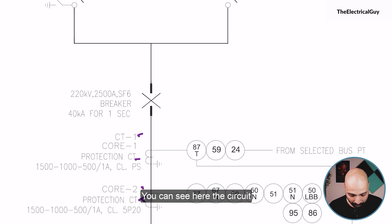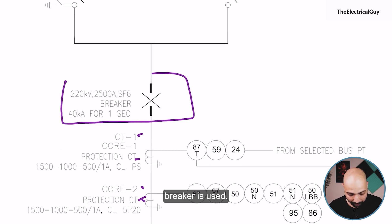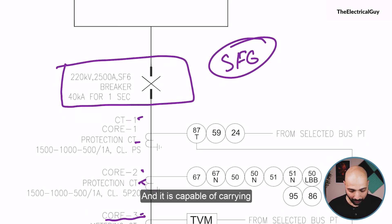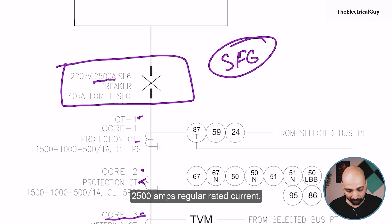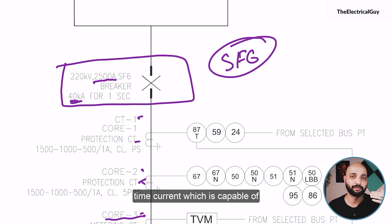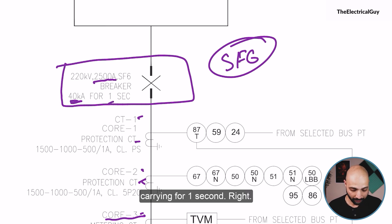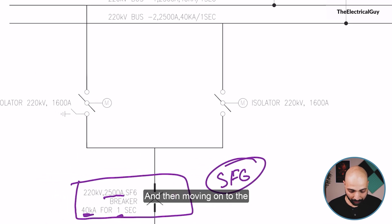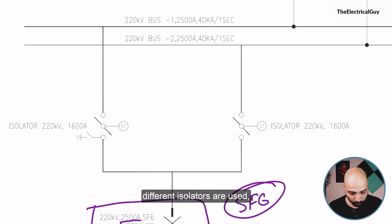Moving on, you can see the circuit breaker is used. This is an SF6 circuit breaker — almost all circuit breakers you will see nowadays are mostly SF6. It is capable of carrying 2500 amps rated current, and 40 kilo amperes is the short-time current which the circuit breaker is capable of breaking as well as carrying for one second.